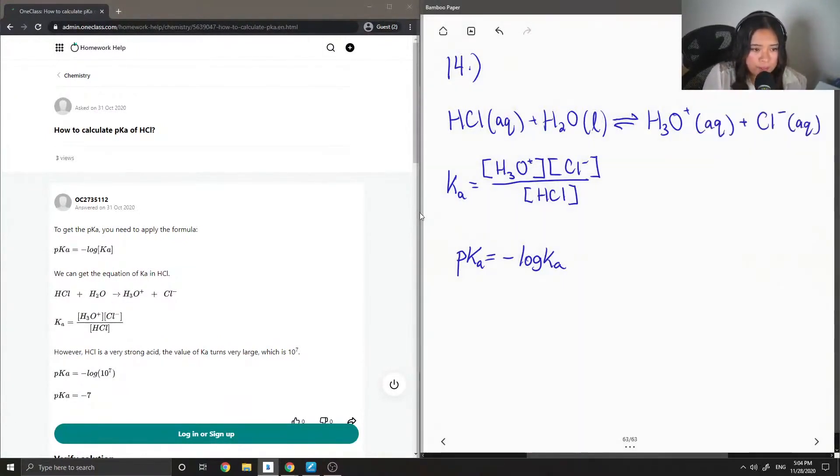So the Ka, I'll just note, is the acid dissociation constant. It tells us the strength of an acid. If you have a larger Ka value, you have a stronger acid. If you have a smaller Ka value, it's a weaker acid.